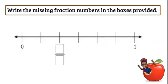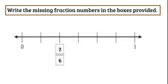Write the missing fraction numbers in the boxes provided. How many equal parts? 1, 2, 3, 4, 5, 6. Counting from the left, so we have 2 out of 6 spaces. Number 6 spaces.